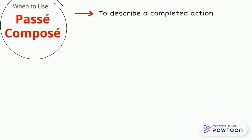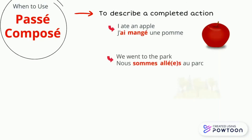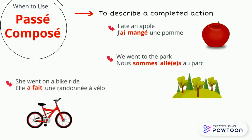But when do we use passé composé? Well, we use passé composé to describe a completed action — such as, I ate an apple: j'ai mangé une pomme. Or, we went to the park: nous sommes allés au parc. And lastly, she went on a bike ride: elle a fait une randonnée à vélo.